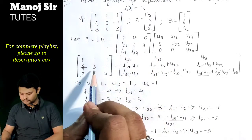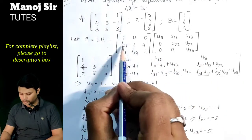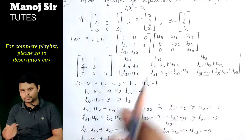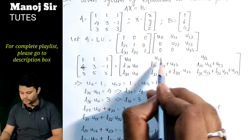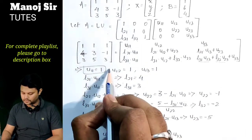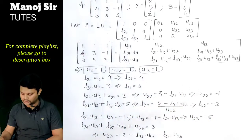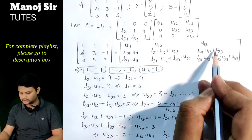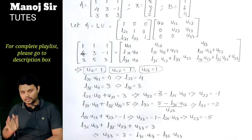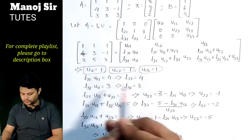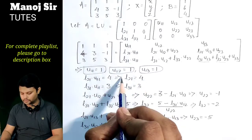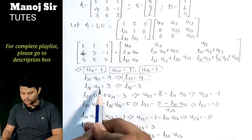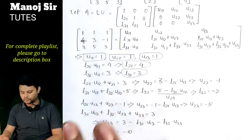Comparing both sides with the coefficient matrix A, we have 9 unknowns. From the first row: u11 = 1, u12 = 1, u13 = 1. Then solving column-wise: from the (2,1) position, l21·u11 = 4 and since u11 = 1, we get l21 = 4. From the (3,1) position, l31·u11 = 3, so l31 = 3.